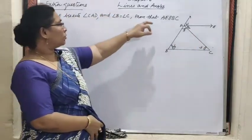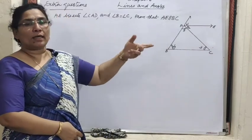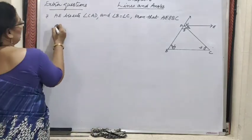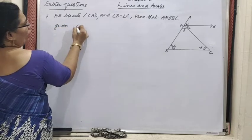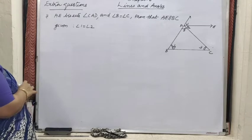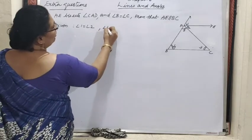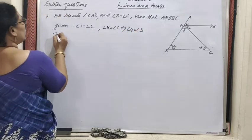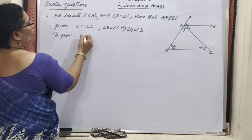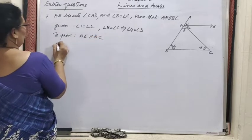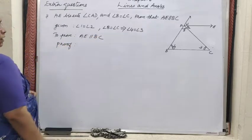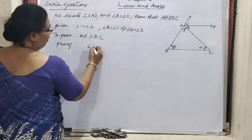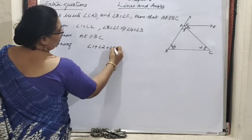Given: angle 1 equals angle 2, that is the meaning of AE bisects angle CAD. And angle B equals angle C implies angle 4 equals angle 3. To prove: AE parallel to BC. Now, can you tell me that angle 1 plus angle 2 plus angle 5 equals 180 degrees? The reason is it is a straight angle.